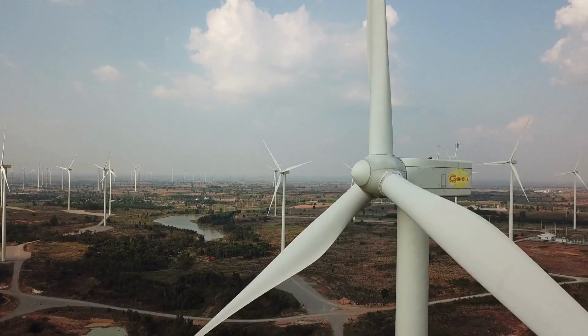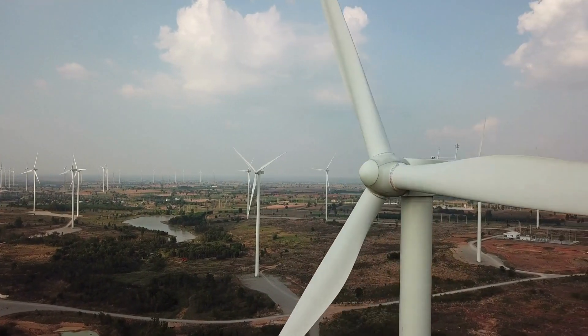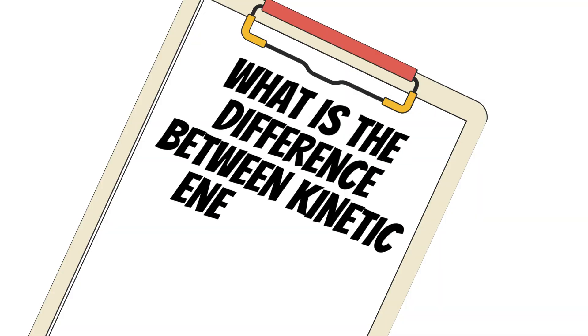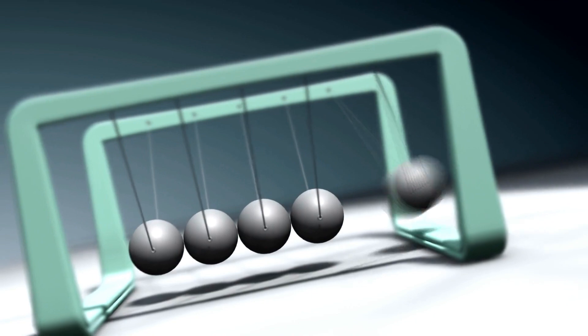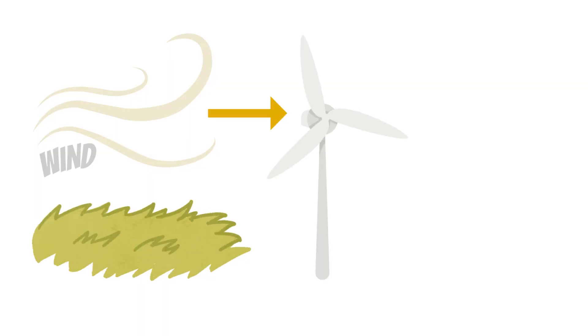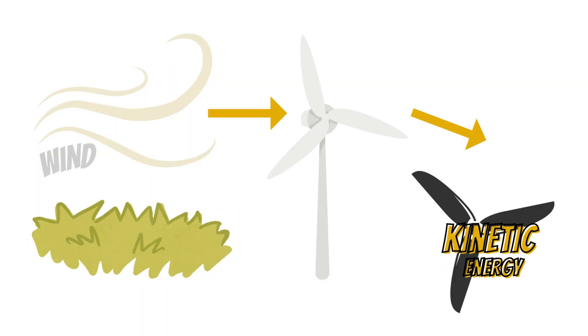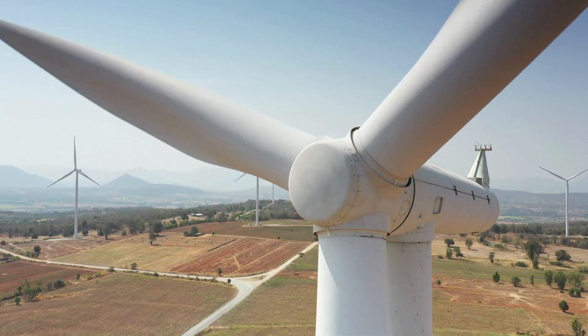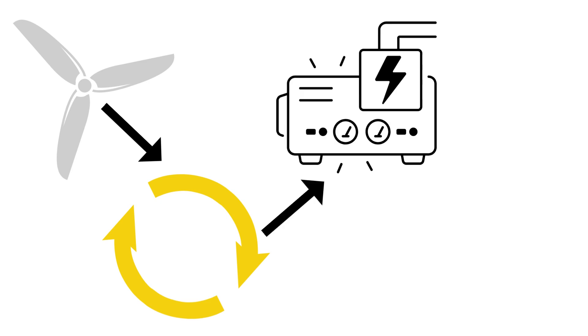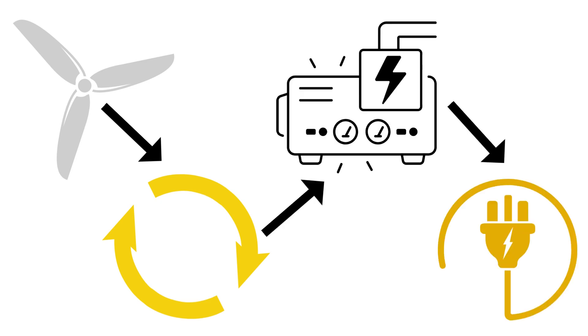With the invention of wind turbines, we are now able to convert kinetic energy from the wind into electrical energy. Kinetic energy is moving energy — the energy an object has because of its motion. For example, a gentle breeze can make the blades of a wind turbine spin, creating kinetic energy. As the blades rotate, this kinetic energy converts into rotational energy, which is then transferred through the turbine's generator, producing electrical energy.